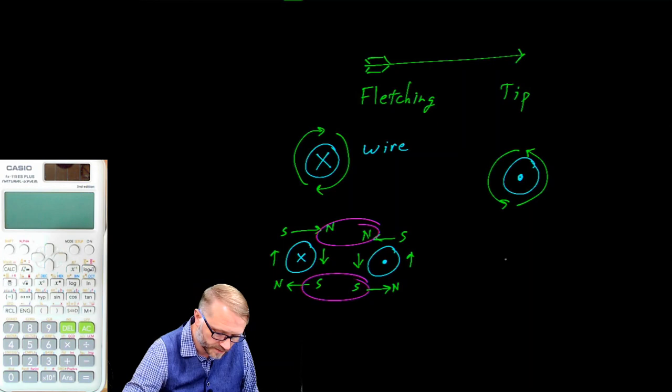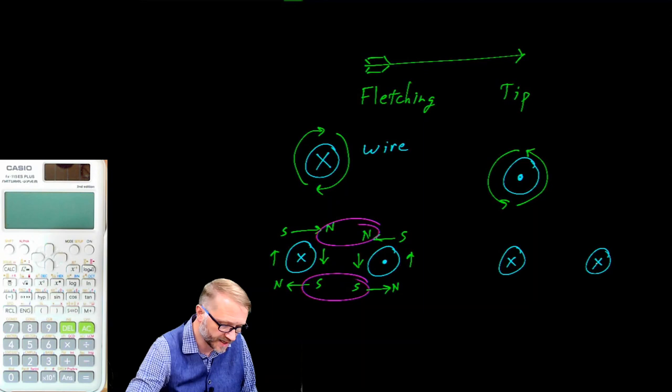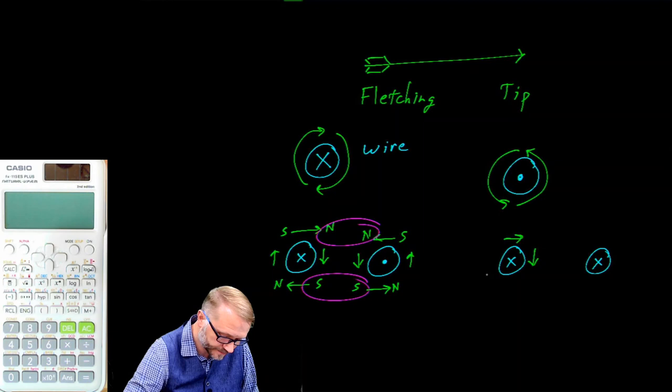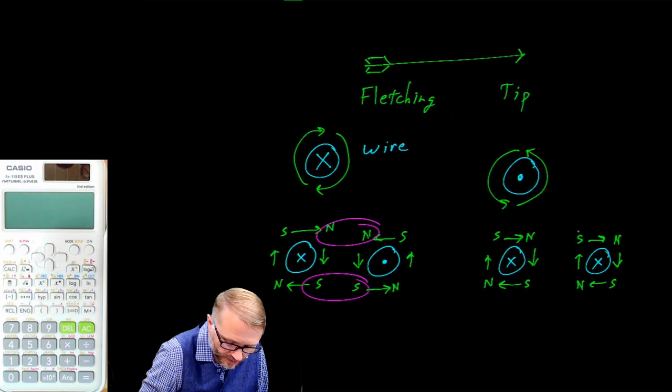Whereas if you had two wires with current going in the same direction — in this case both into the page — you would have magnetic fields where a north and south interact, and you can see that these would tend to pull together through the interaction of these pieces.